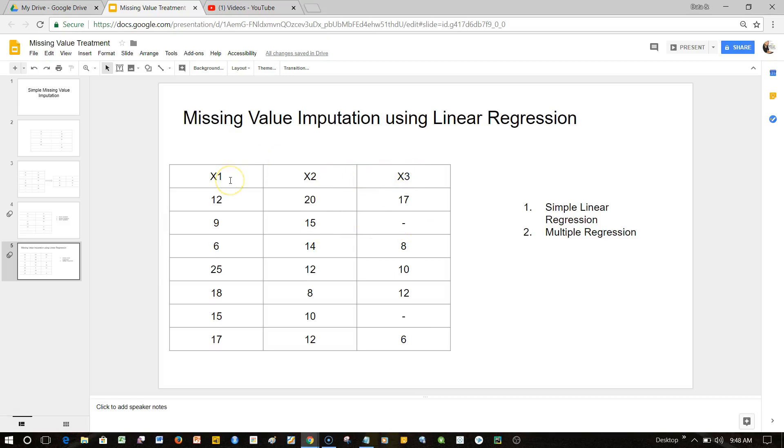Linear regression has some assumptions, and one of the first assumptions is that values should be linearly correlated. That's what we're trying to do - find the correlation between the two variables, X3 and X2, or X3 and X1.